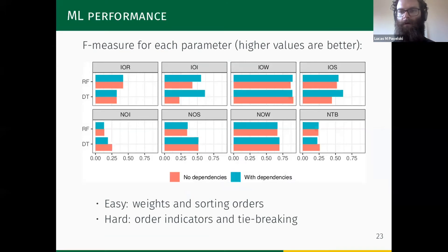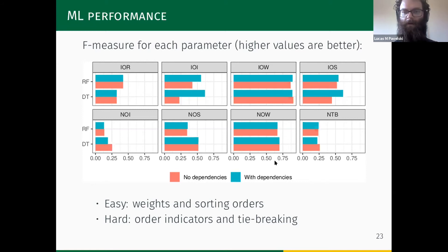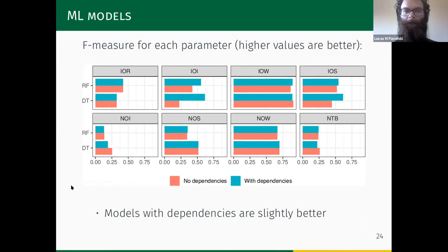From a machine learning perspective, we show the F-measure for each parameter across different models. Higher values indicate better predictions. Some parameters like 'weights' were easy to predict, while others like tie-breaking and NEH order indicator were harder. We also observed that for some cases like the order indicator and order sorting, the model with parameter dependencies performed slightly better.